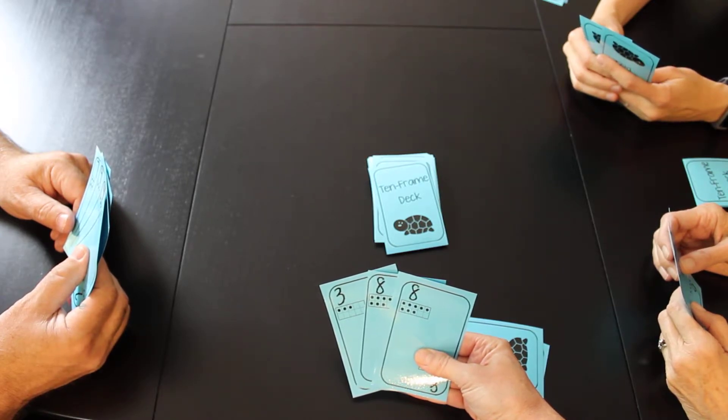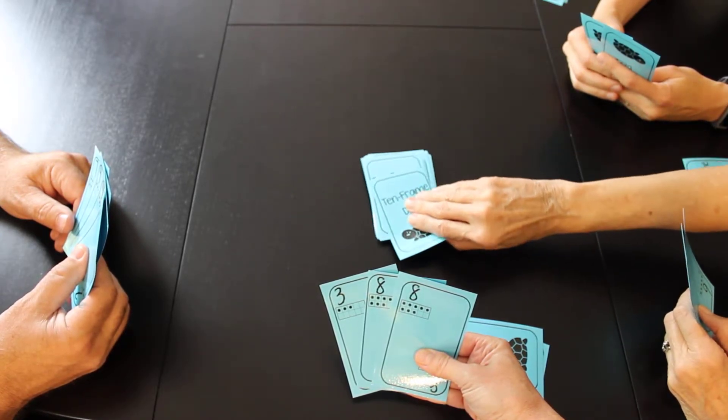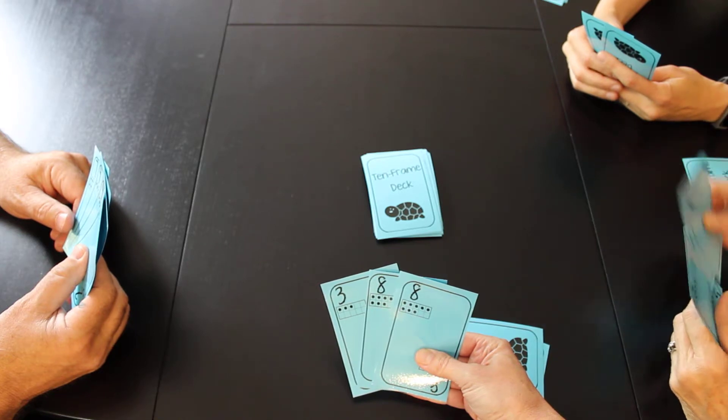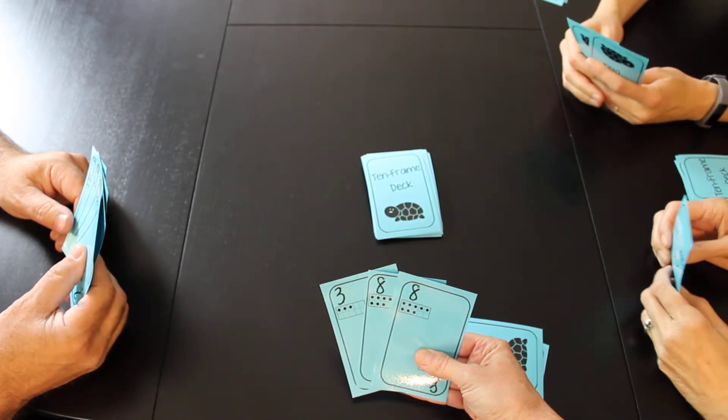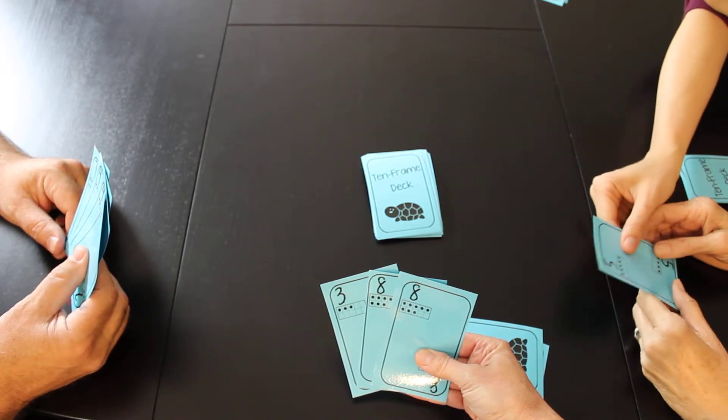Jen, do you have a four? Go fish. Got my ten. She got her six plus four. She put it aside. She only has one card left.